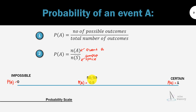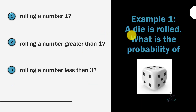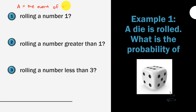Now let's go to some examples on how to calculate probability. The first example: a die is rolled. What is the probability of rolling a number 1? We have a fair die. Let A be the event of obtaining 1.